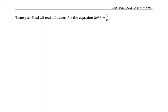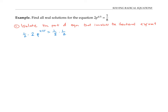This next equation might not look like one involving radicals, but a fractional exponent is a radical in disguise. We'll use the same approach: isolate the part of the equation with the fractional exponent. Starting with two times p to the four-fifths equals one-eighth, I divide both sides by two to get p to the four-fifths equals one-sixteenth.